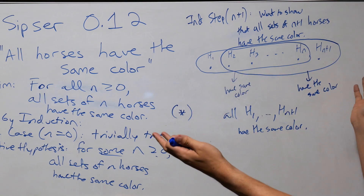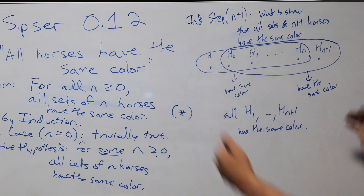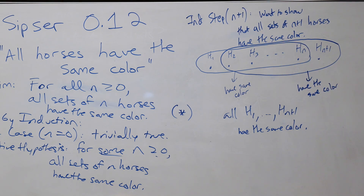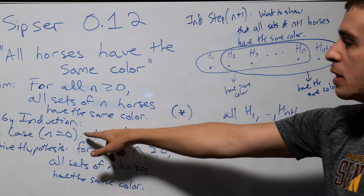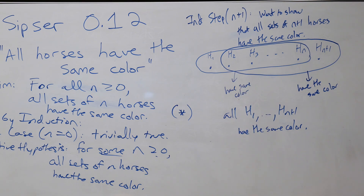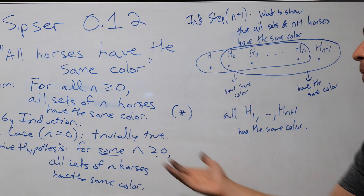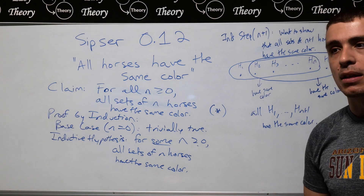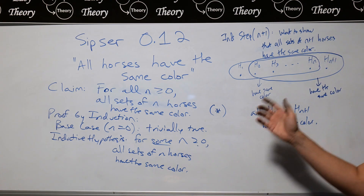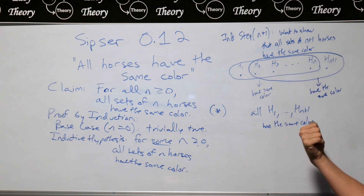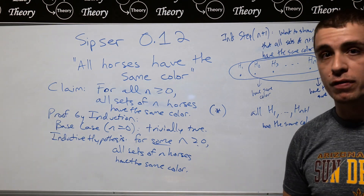This is a completely arbitrary set of n+1 horses — I assumed nothing about them. Therefore, we have shown that every set of n+1 horses has the same color. Since we have proven the base case and via the inductive step — with the help of the inductive hypothesis — all sets of n horses for any n have the same color. And that clearly is false. Pause the video and try to figure out where the problem or problems happen to be in this proof.